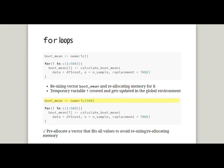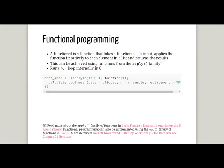To circumvent the first problem of having your vector resized with memory reallocation, you can pre-allocate — specifying boot_mean to be a vector of length 500. That avoids the resizing problem. But a better solution is the idea of functional programming.